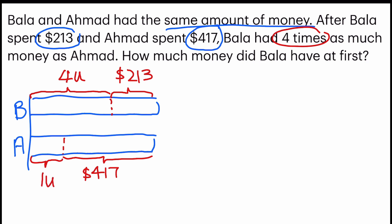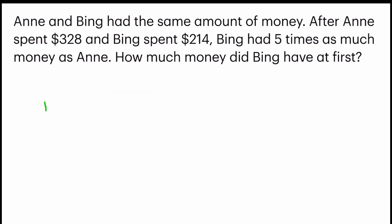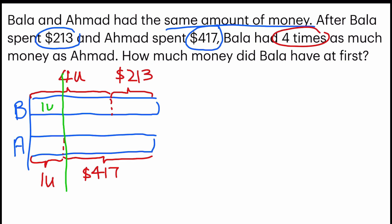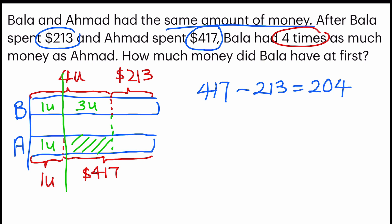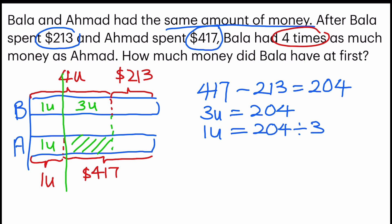Same thing — let's compare by cutting a line down. This is equal to one unit, and same goes to the bottom, which I can infer that this portion is equal to three units. To find that amount, it's the same as taking $417 subtract $213, which gives me $204. That is equal to three units, so I can go ahead to find one unit by dividing 204 by 3, and I'll find $68 for one unit.